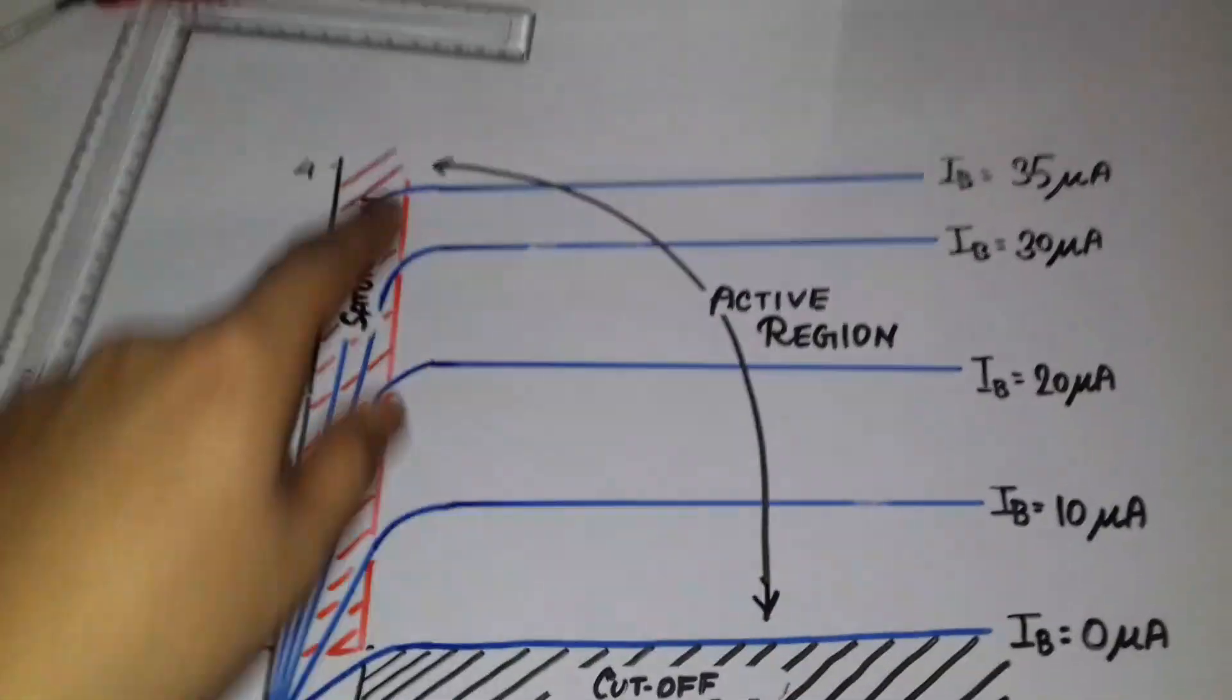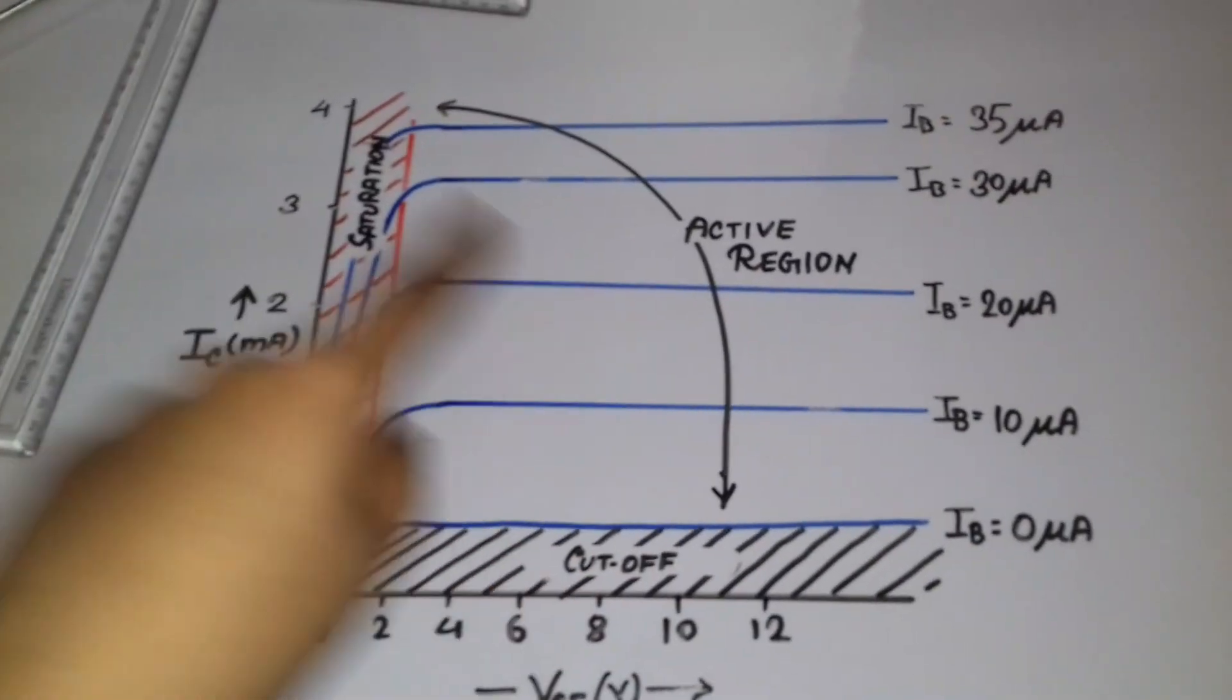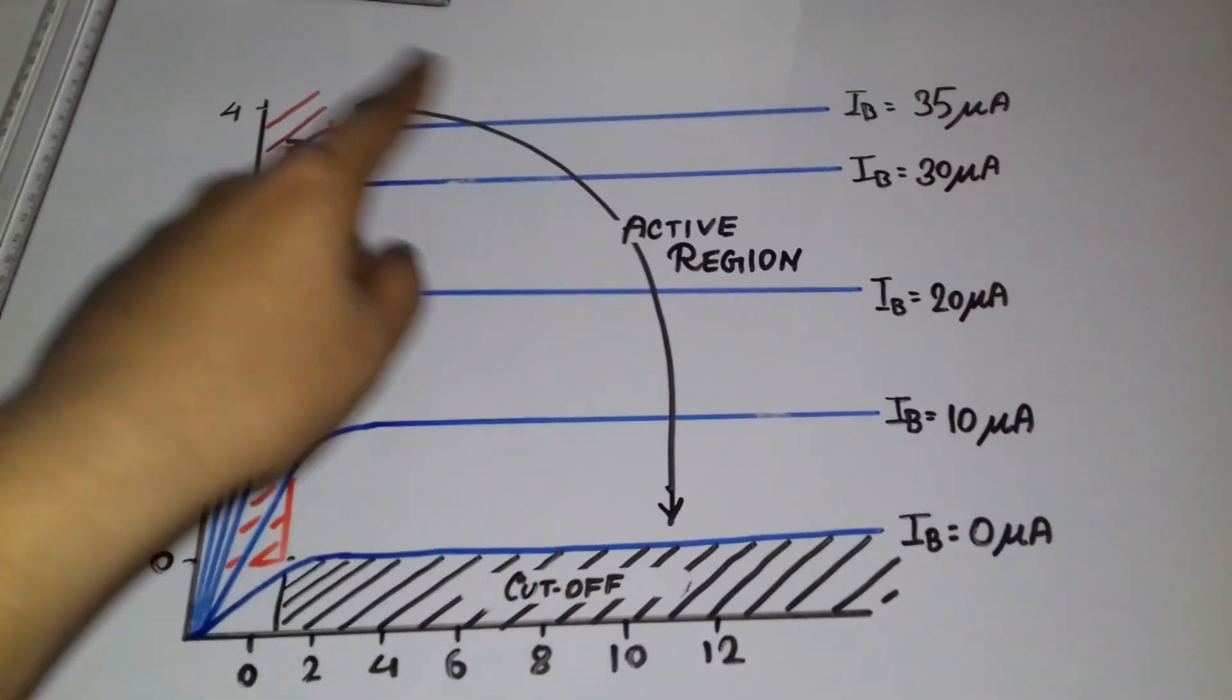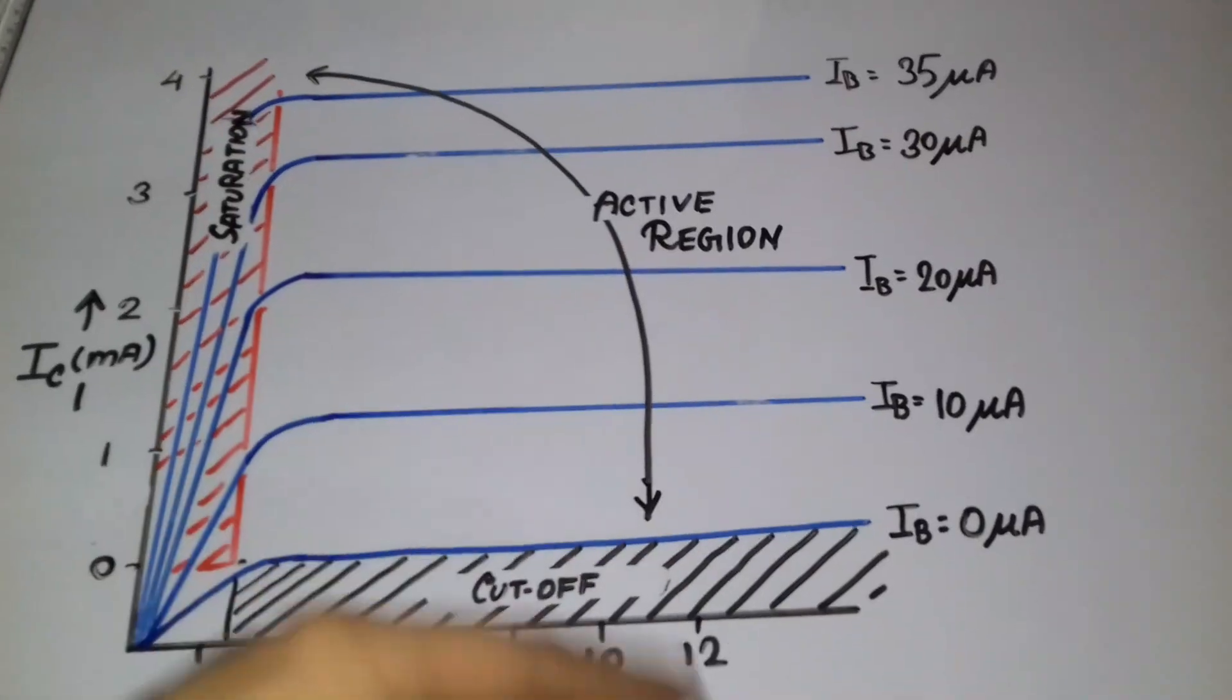And that is the on state of the transistor. And between these two, the active region. And here the transistor works as an amplifier, as I had shown in the previous two videos.